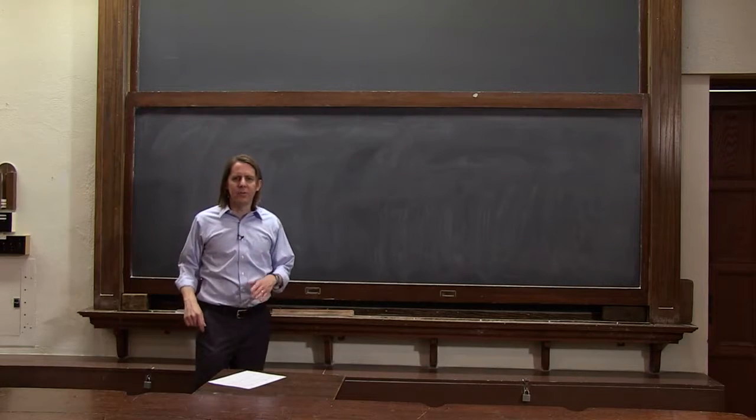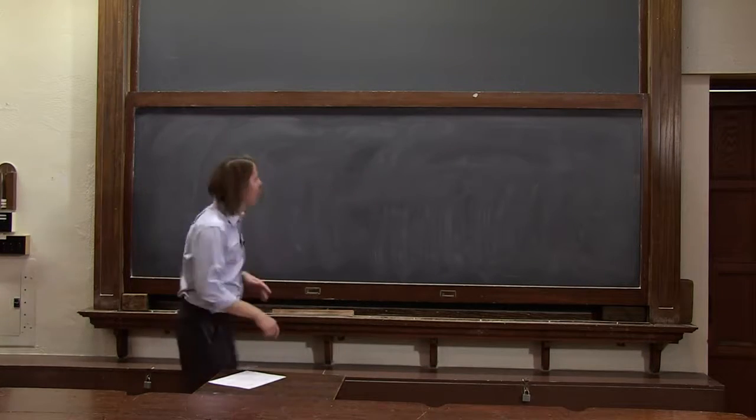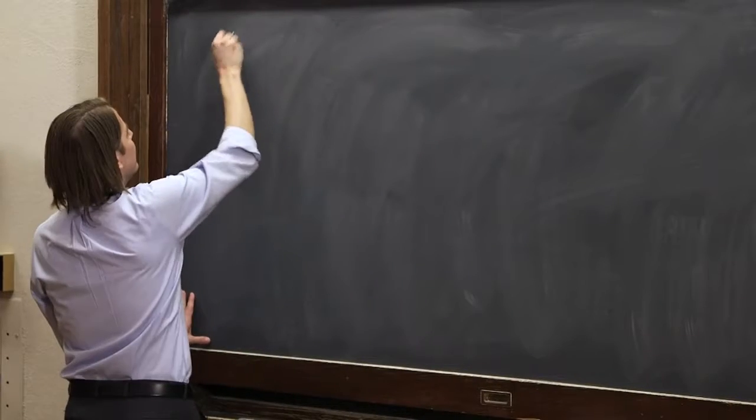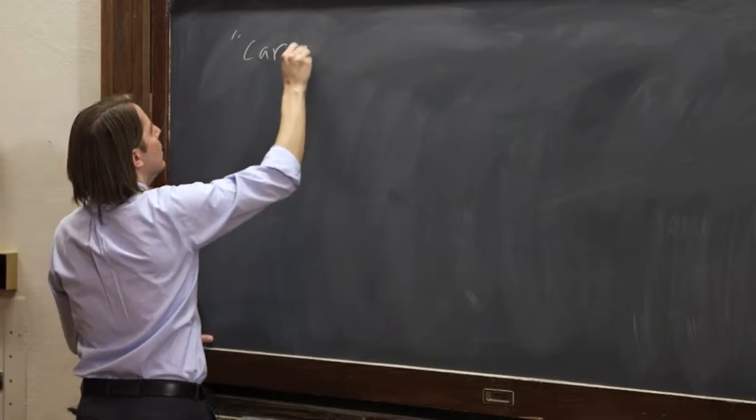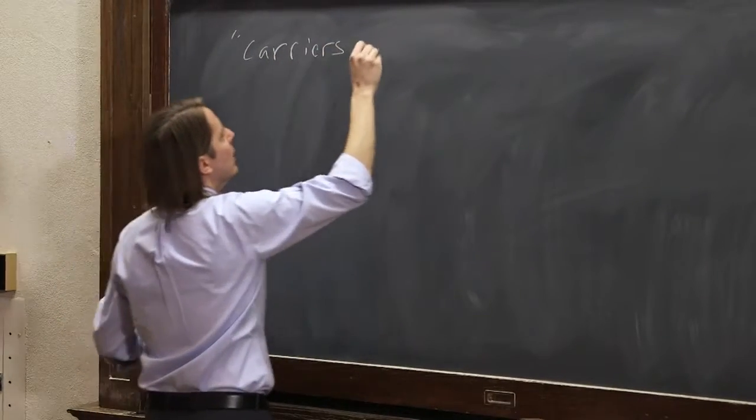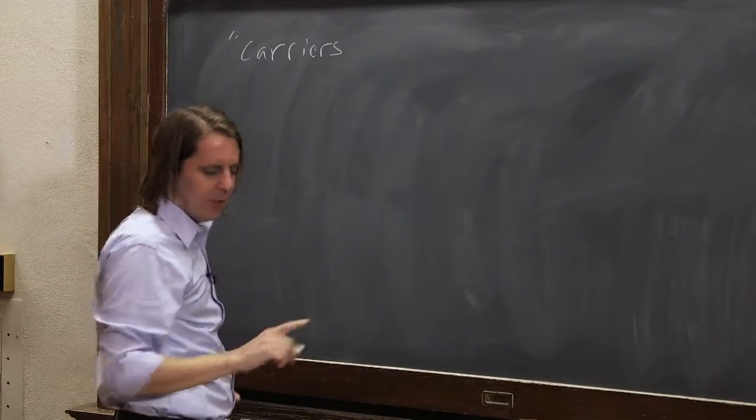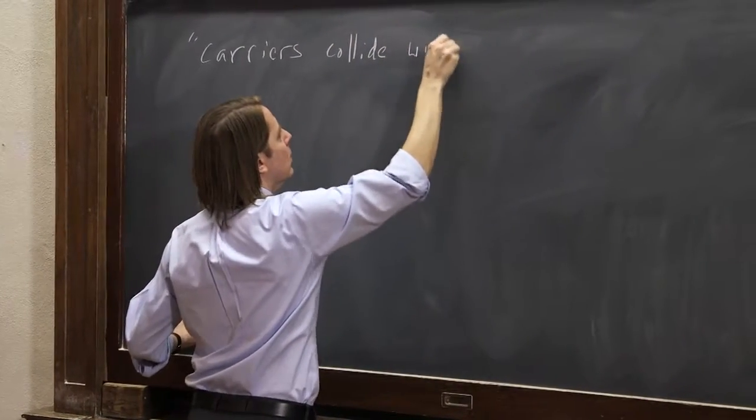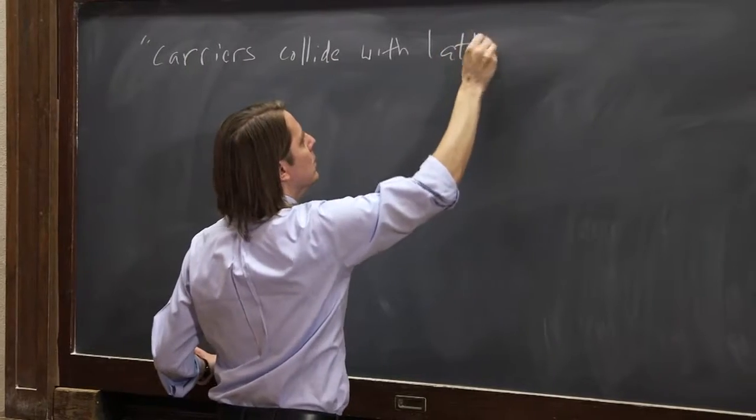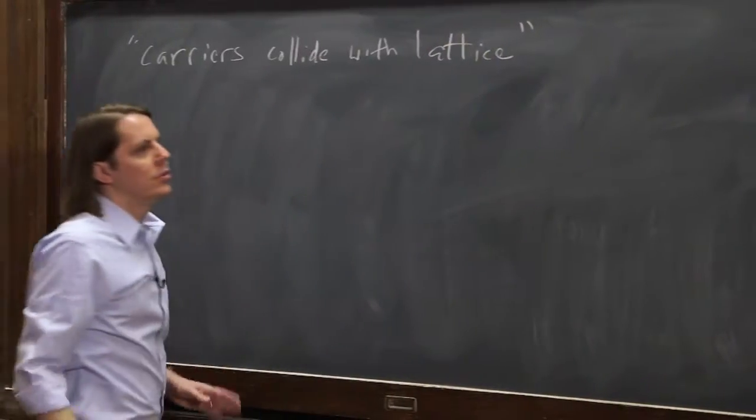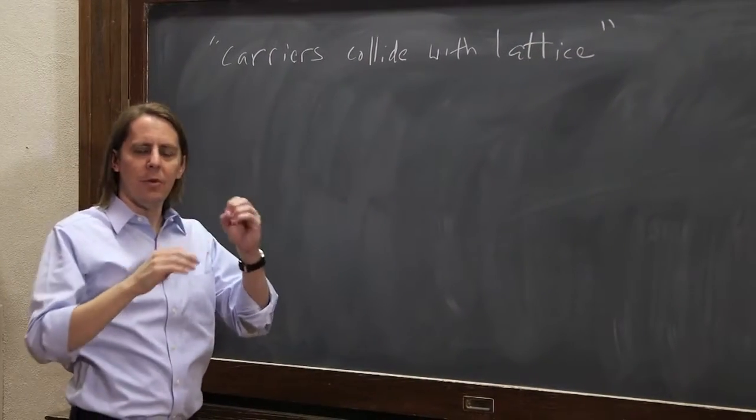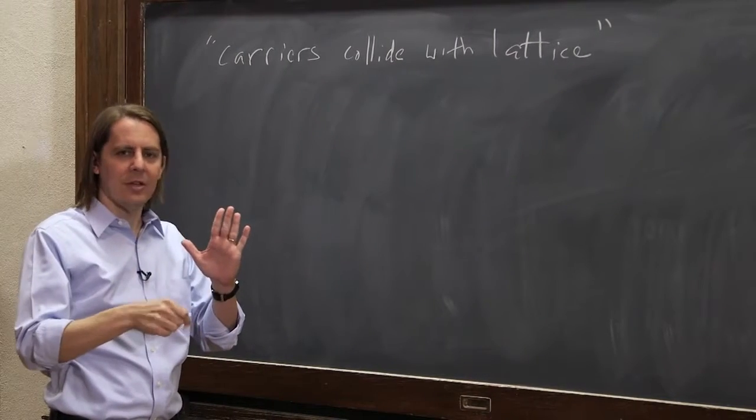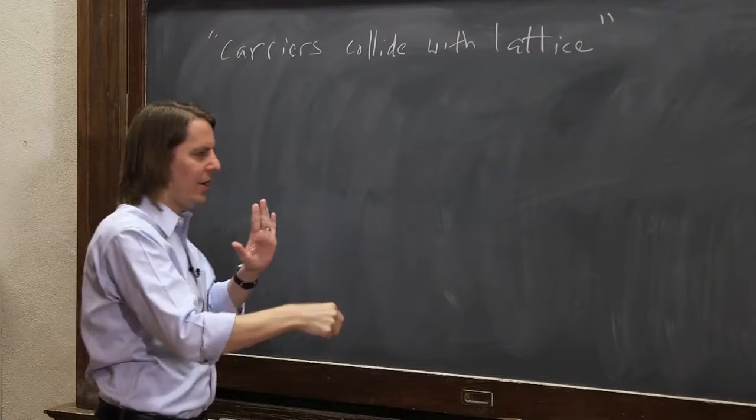We can get a little more insight into resistivity and conductivity if we look a little more carefully. Let's see, what did this mean? Carriers collide with the lattice. So we had this idea that they feel electric field, their velocity increases, they're accelerated, and then they hit the lattice and they stop. They go and hit the lattice again and again.